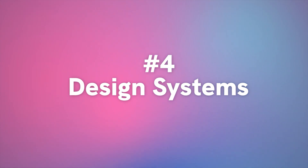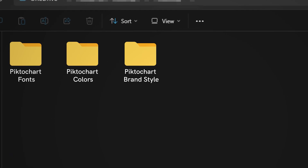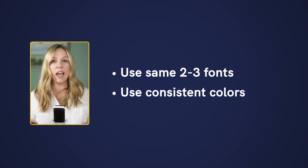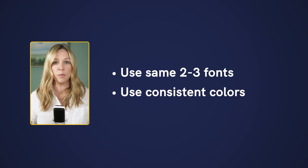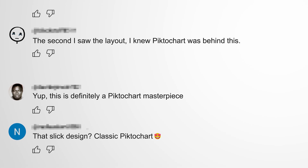Rule number four: use design systems to stay consistent. A design system is pretty simple — you pick your fonts, your colors, and your styles for your brand, and you use them consistently. If you use the same two to three fonts, a few consistent colors, and other recognizable elements, you'll build visual recognition and trust with your audience. It will also keep all your infographics clean and consistent, rather than introducing some new idea each time, which could potentially lead to a mess and confusion.